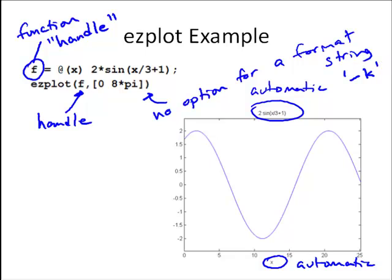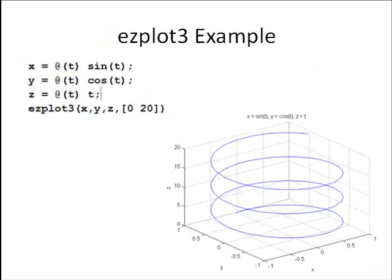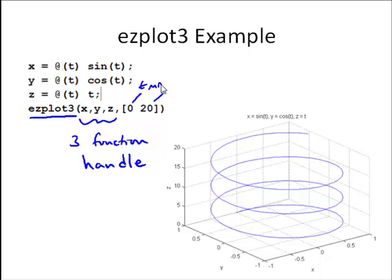EasyPlot3 is similar. Here's three parametric functions that define a helix. x equals sine of t, y equals cosine of t, and z equals t. Together, those three functions define a helix. And we can get a look at that using the EasyPlot3 function. And again, we enter the three function handles. And those three function handles are passed to the EasyPlot function so that it can evaluate these functions for values of t from 0 to 20. So that's, again, tmin and tmax. And that gives us this helix.